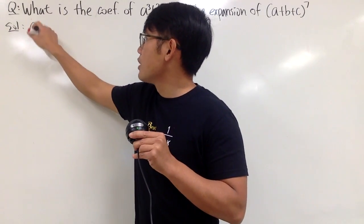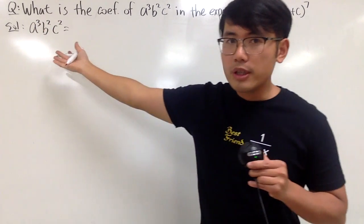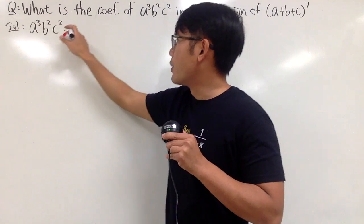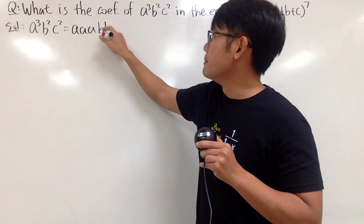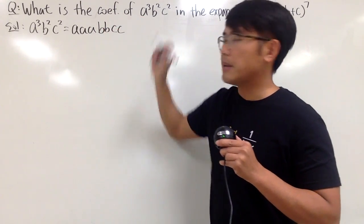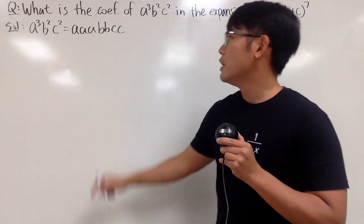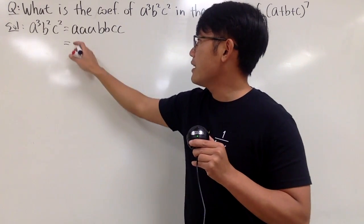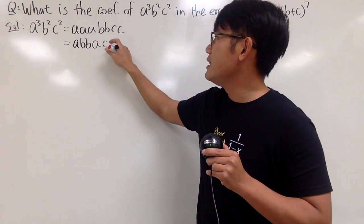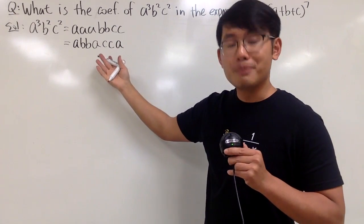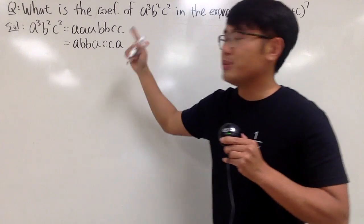Let's figure this out. Let's take a look at A to the third power, B to the second power, C to the second power. You can write this out: A to the third power is A times A times A, B to the second power is B times B, and C squared is C times C.